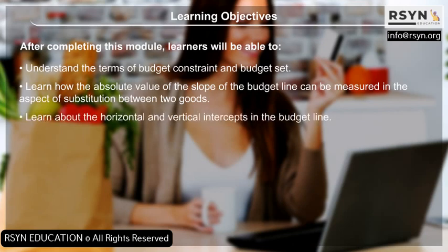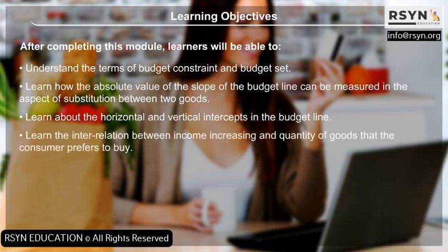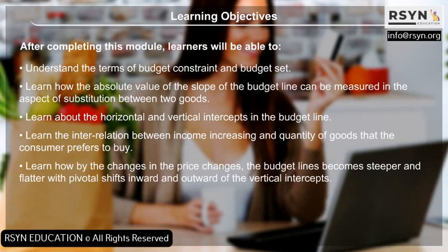Learners will learn about the horizontal and vertical intercepts in the budget line, and the interrelation between income increasing and the quantity of goods that the consumer prefers to buy. They will also learn how changes in price cause the budget lines to become steeper and flatter with pivotal shifts inward and outward of the vertical intercepts.